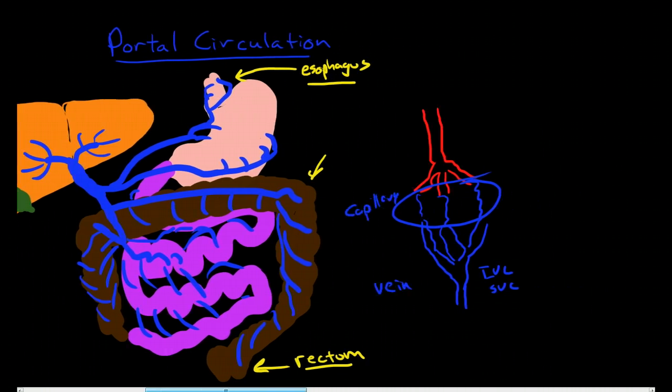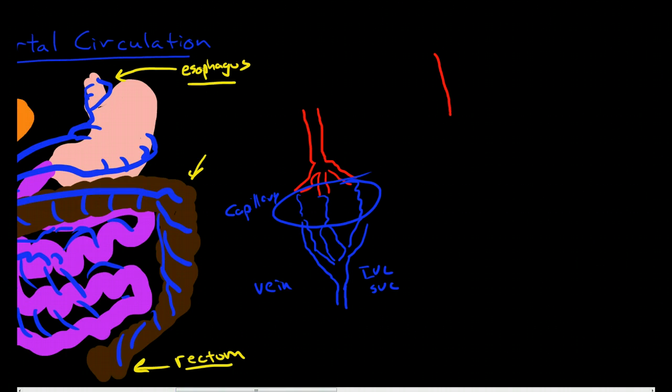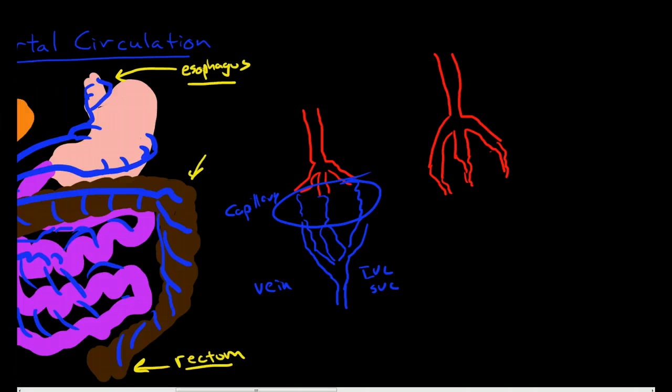However, when we have a portal vein system, and I remember introducing this when I talked about the anterior pituitary gland because it's the other place in the body where we have a portal vein system. With the portal vein system what we have is arteries, arterioles, and capillaries...